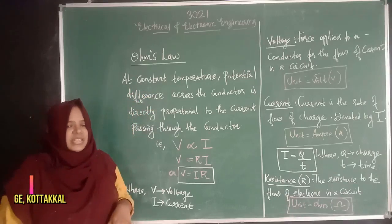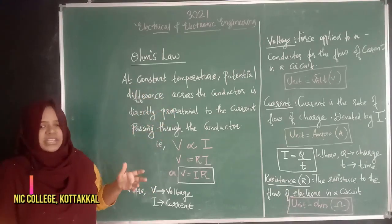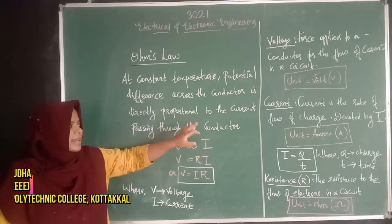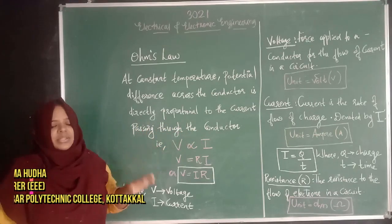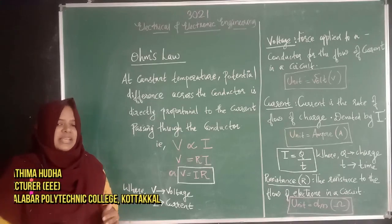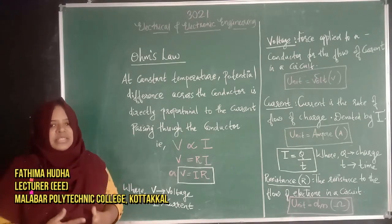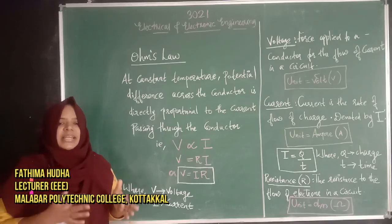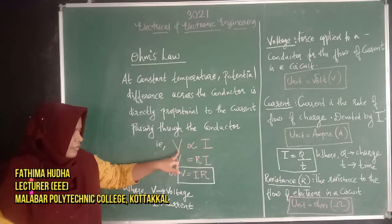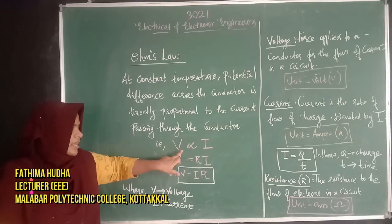Now, let's look at the definition of Ohm's Law. At constant temperature, the potential difference across a conductor is directly proportional to the current passing through the conductor. The potential difference means the voltage V.